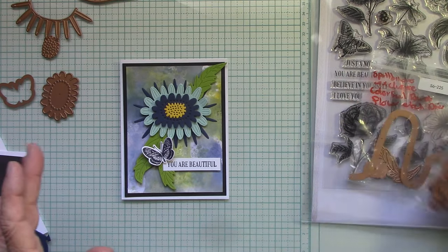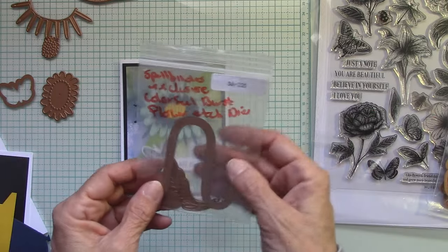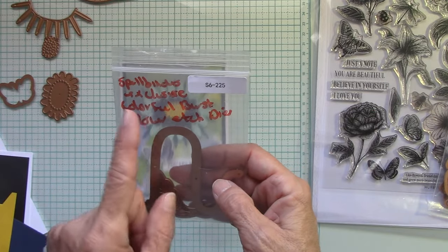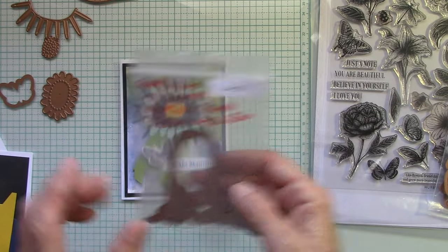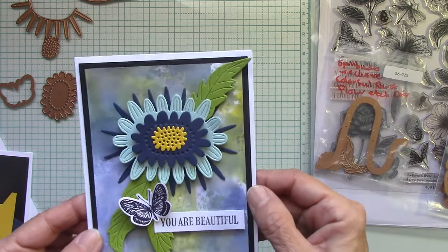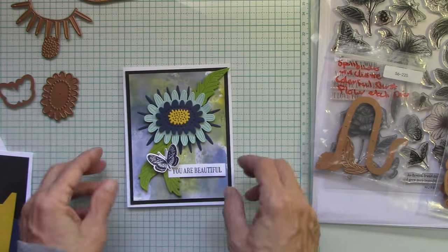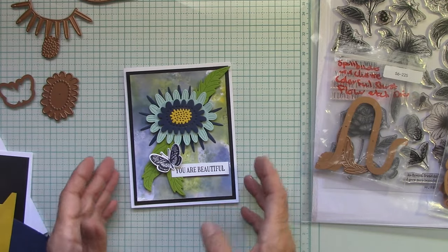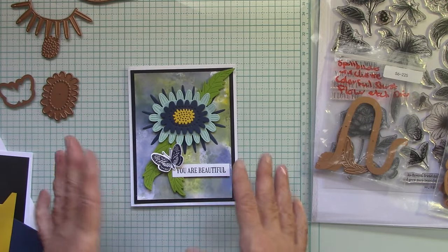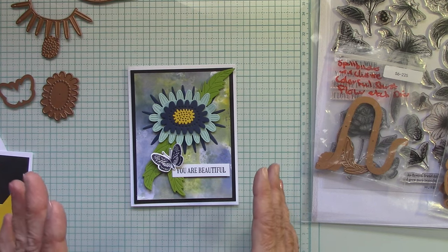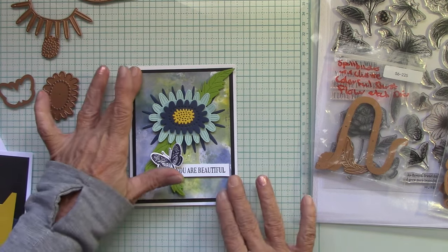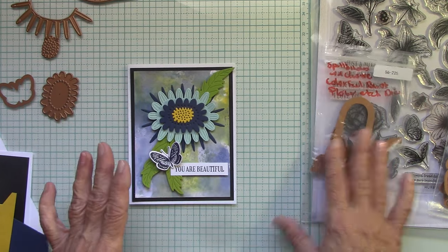So today we're going to use this wonderful exclusive colorful burst flower etched die. I fell in love with this flower. There's just something about it that is the center of attention on the card, but I needed something behind it to balance it. So I wanted to show you how I made this paper.